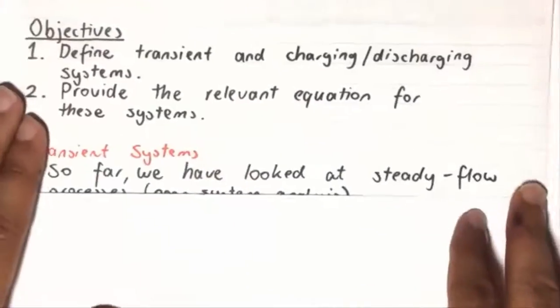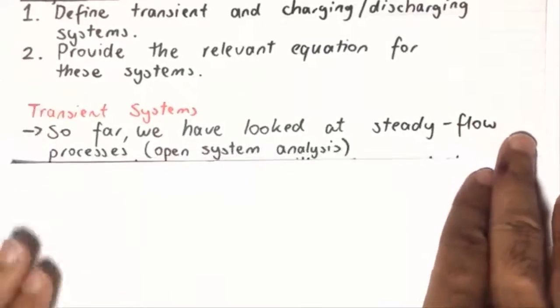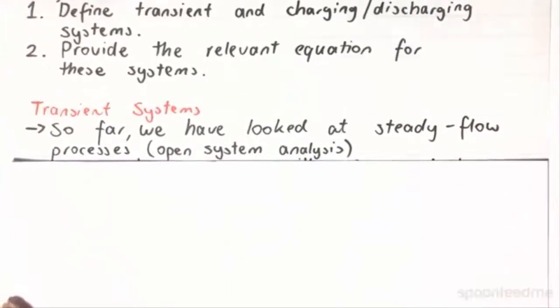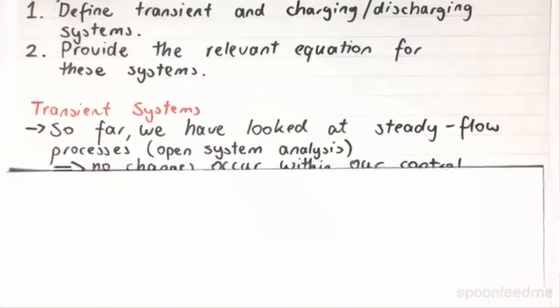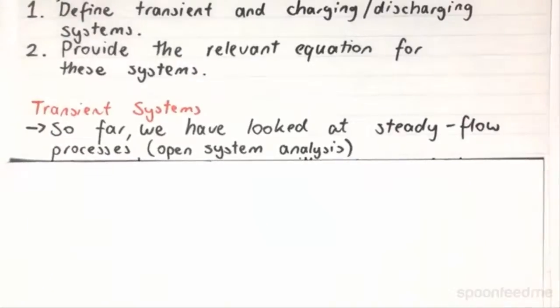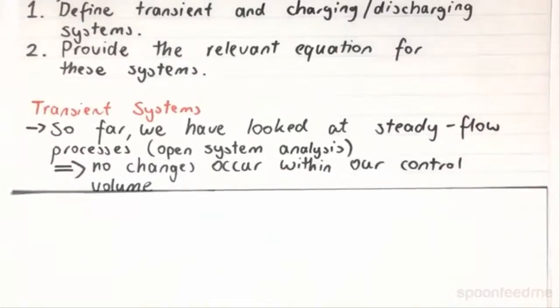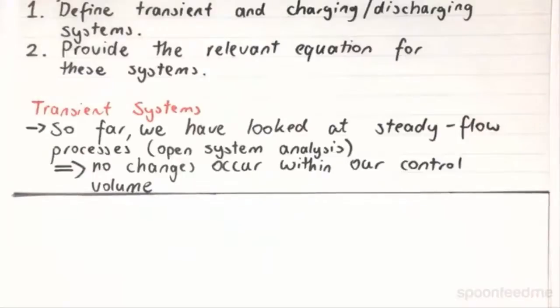So far we have been looking at our steady state steady flow processes. From our open system analysis, if you go back, you will find that the mass flow rate in will equal to the mass flow rate out, and there are no changes that occur within our controlled volumes.